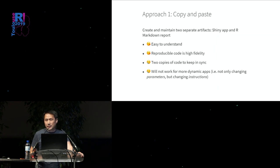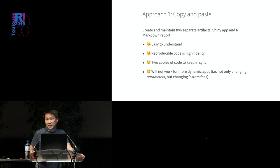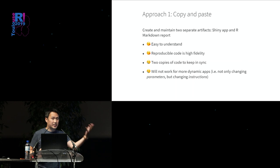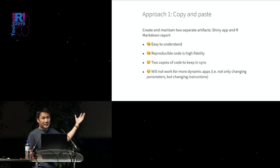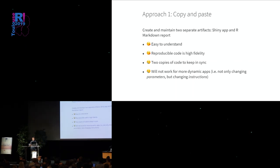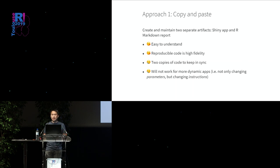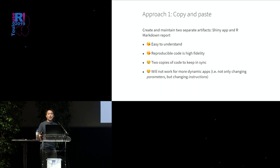Over the years, there have been three approaches. The first and most obvious is copy-pasting: maintain two copies of the logic — one in the Shiny app, one in an R Markdown report. This is valid because it's easy to understand and very literal, and the reproducible code can be handcrafted to be exactly what you want. The downside is you've got two copies to keep in sync, which is tedious and a potential source of errors. Also, some very dynamic Shiny apps create new logic on the fly, making hard-coding difficult.